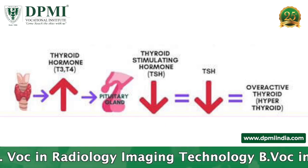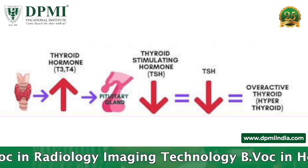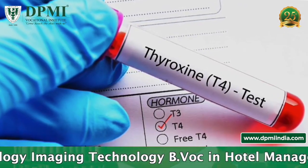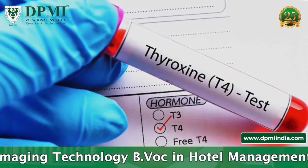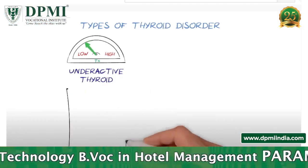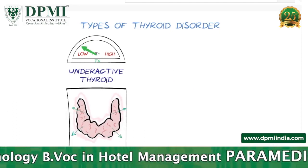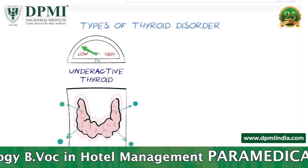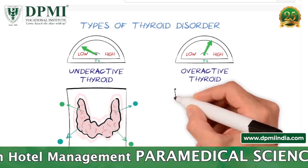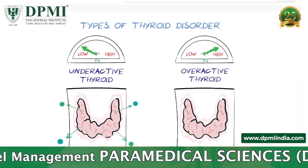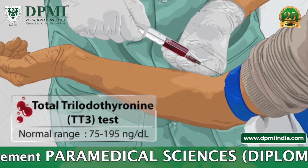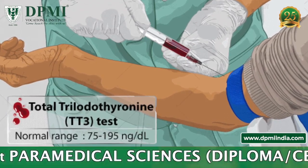The opposite situation, in which the TSH level is low, usually indicates that the thyroid is producing too much thyroid hormone, and it is called hyperthyroidism. T4 test: T4 is the main form of thyroid hormone circulating in the blood. An elevated TSH and a low T4 indicates primary hypothyroidism, while a low TSH and an elevated T4 is found in individuals who have hyperthyroidism.